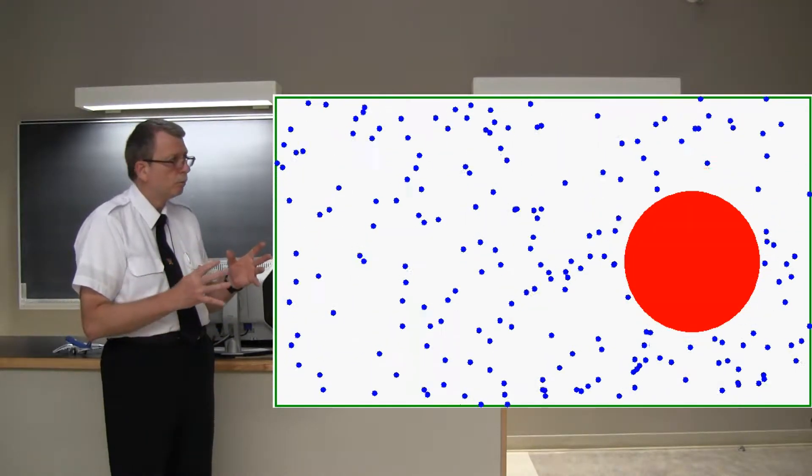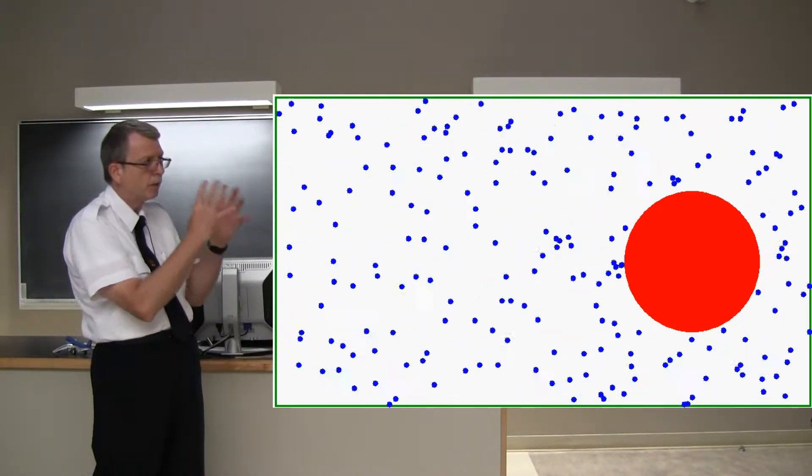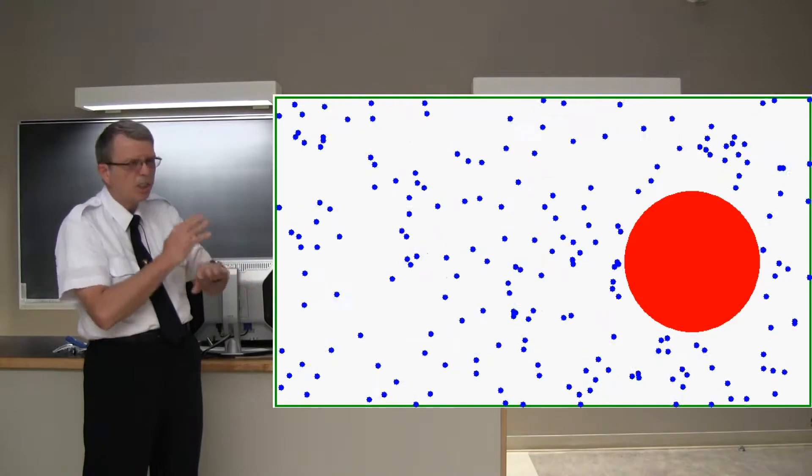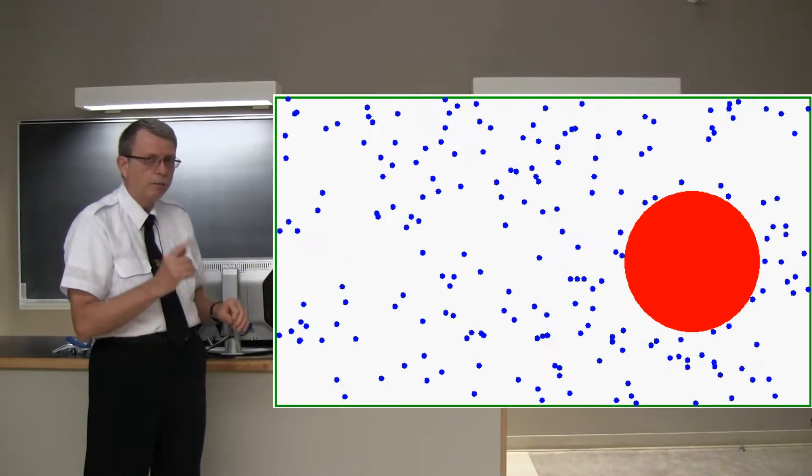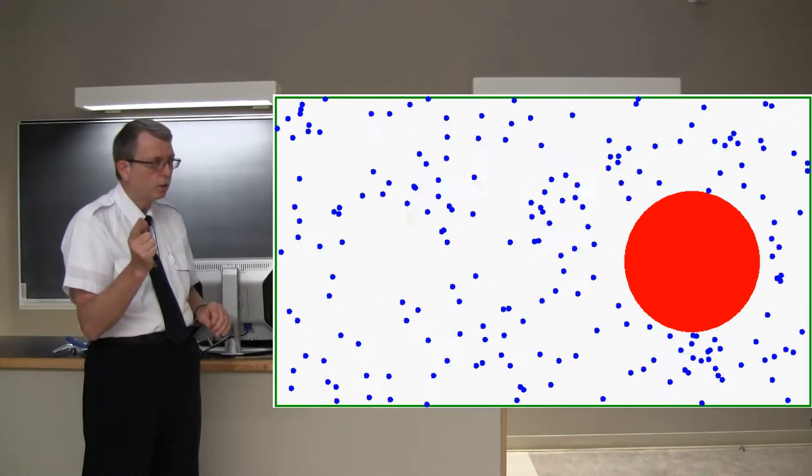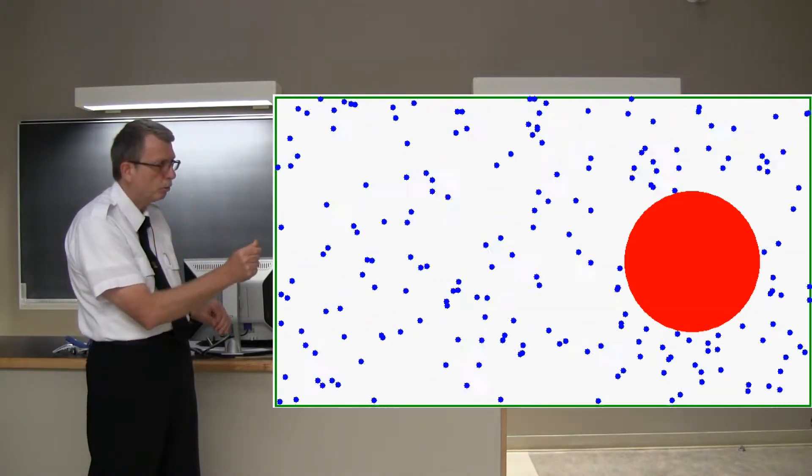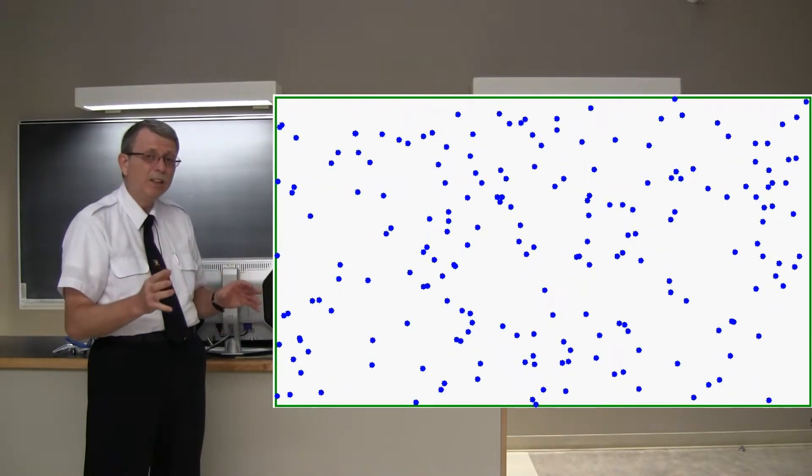But what you can't see right now is that there's a perfect vacuum there because that ball is taking up space. There's literally no air molecules there at all. I'm going to show you the vacuum by making that ball disappear. So watch closely because here it goes. Did you see the vacuum? And did you see it fill in very quickly?